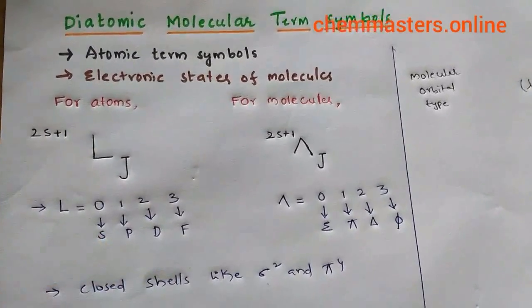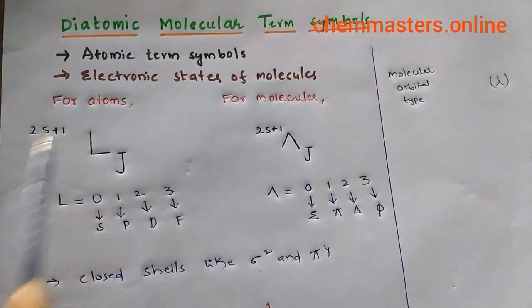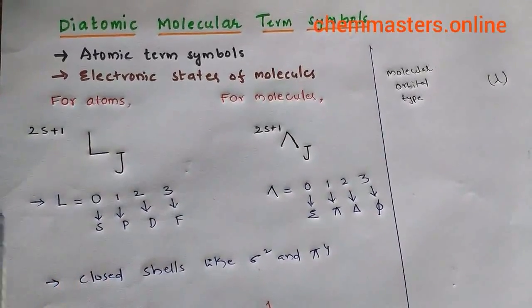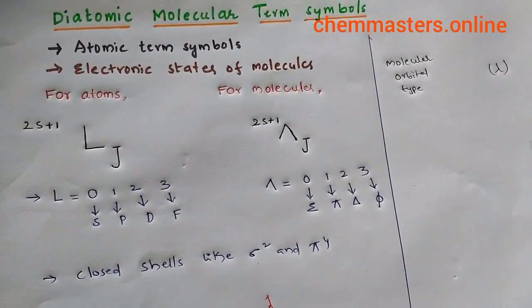If you consider for atoms, we have this arrangement where L denotes total angular momentum of a given atom, 2S+1 is simply called multiplicity, and J is total angular momentum plus spin angular momentum.